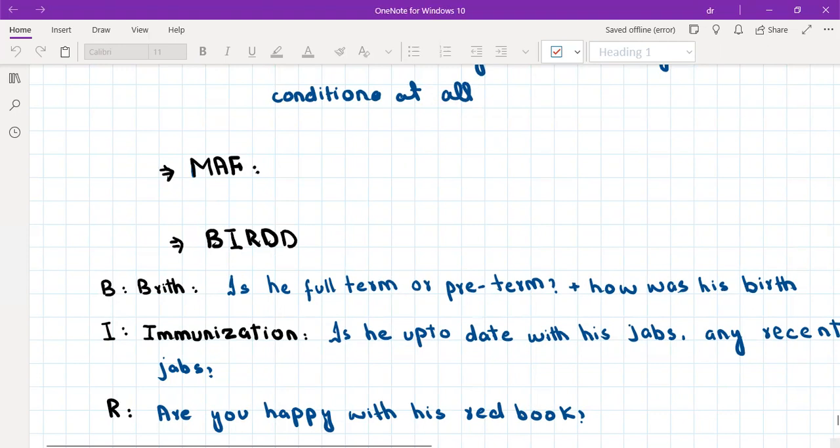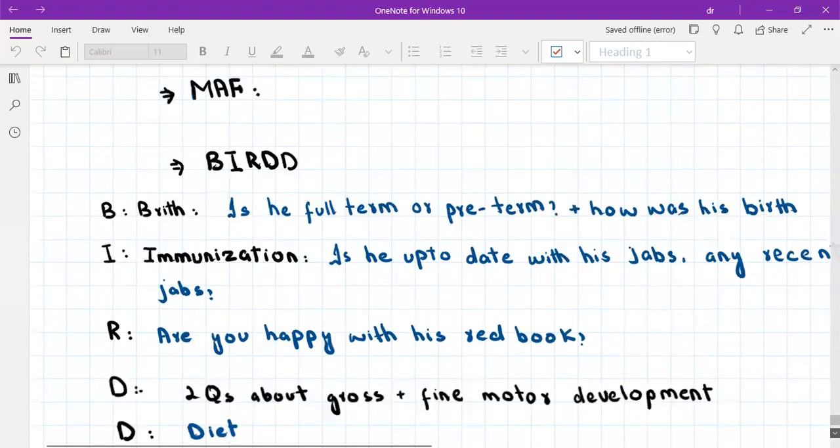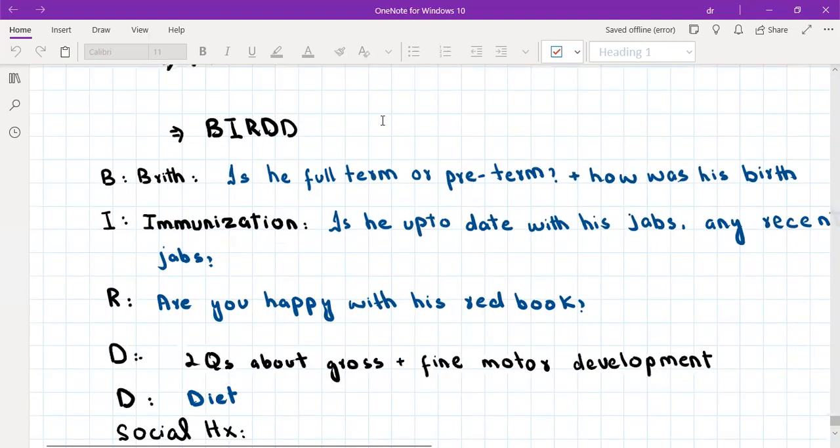So here BIRD is basically a mnemonic where B stands for birth history, I for immunization, R for red book, D for development and the other D is for diet. Okay. So birth history will ask whether he was born full term or preterm and how was his birth. Okay. Was it normal? Was it traumatic? Or cesarean? All right. And sometimes, if it's relevant, you will also ask antenatal history. So any problem before his birth. Okay.